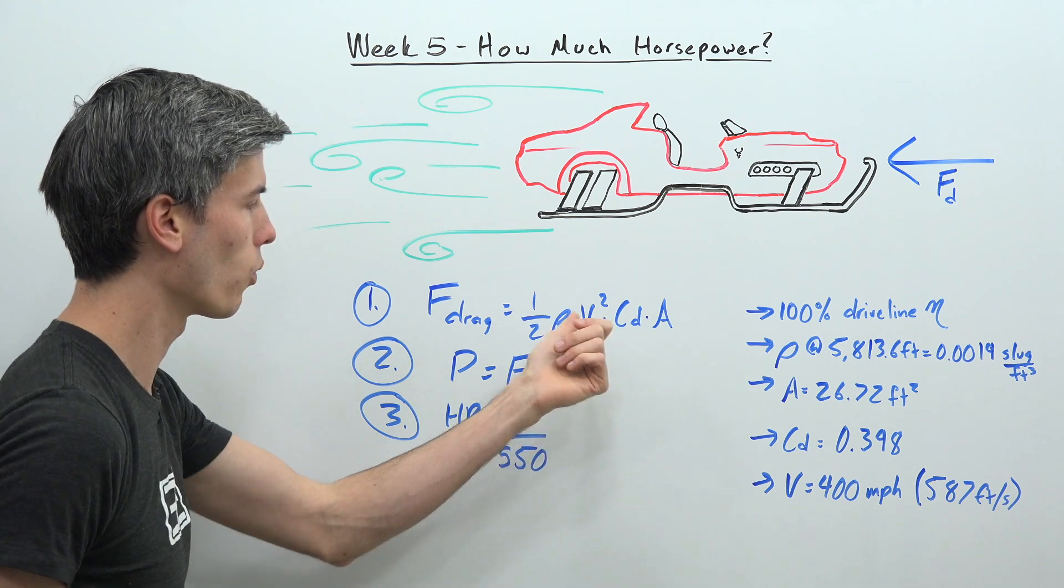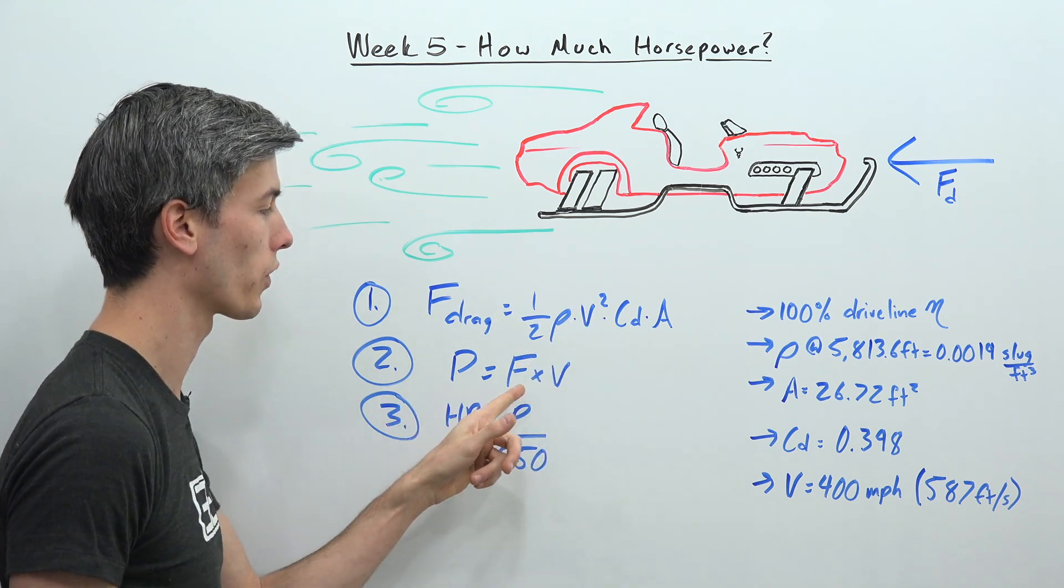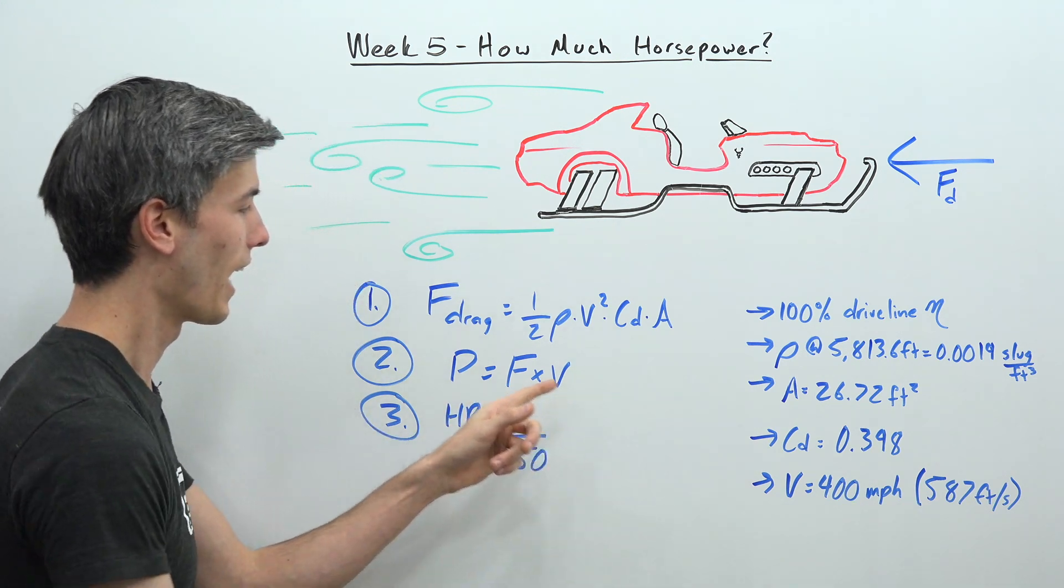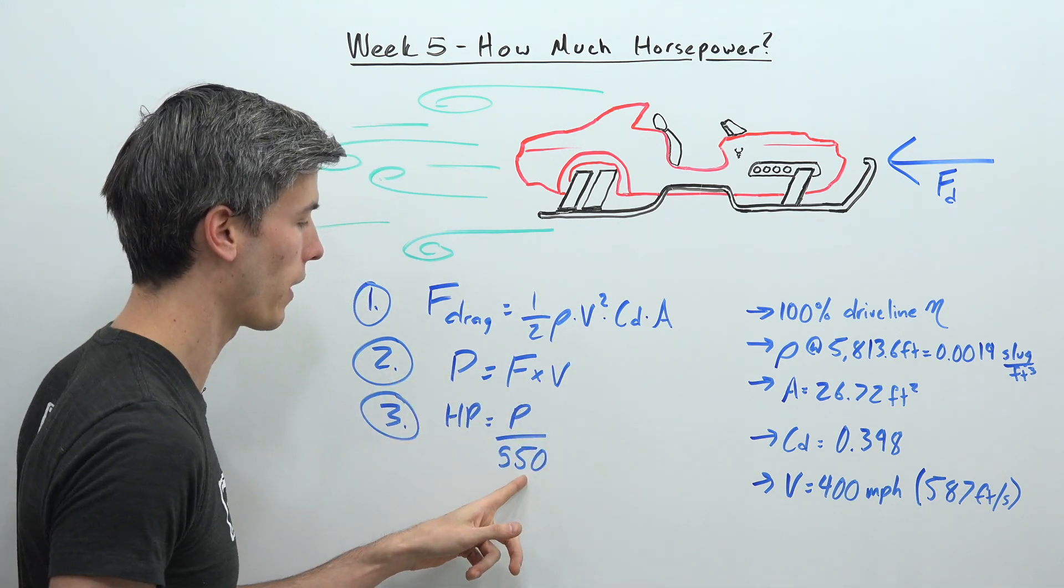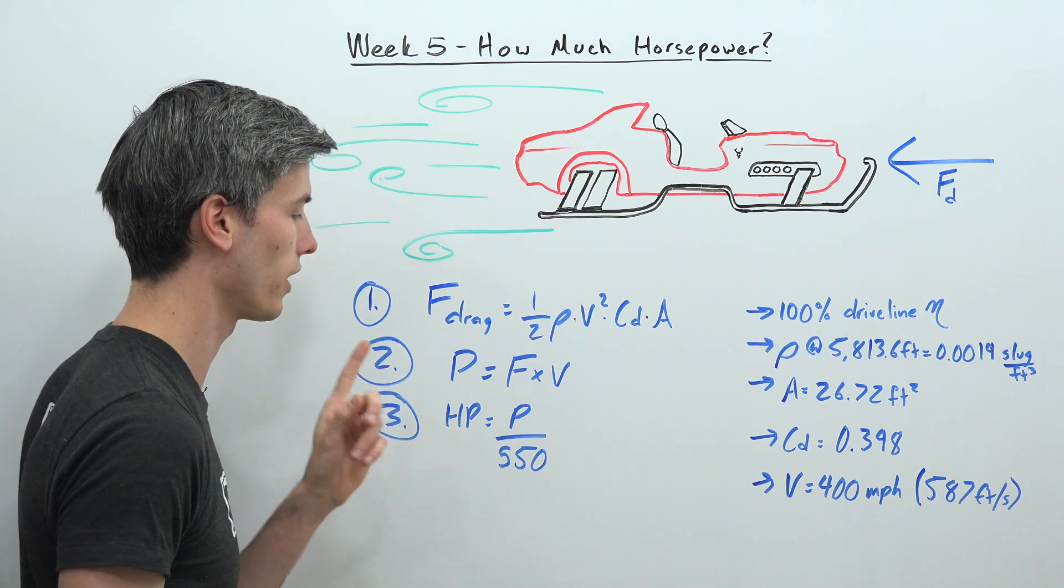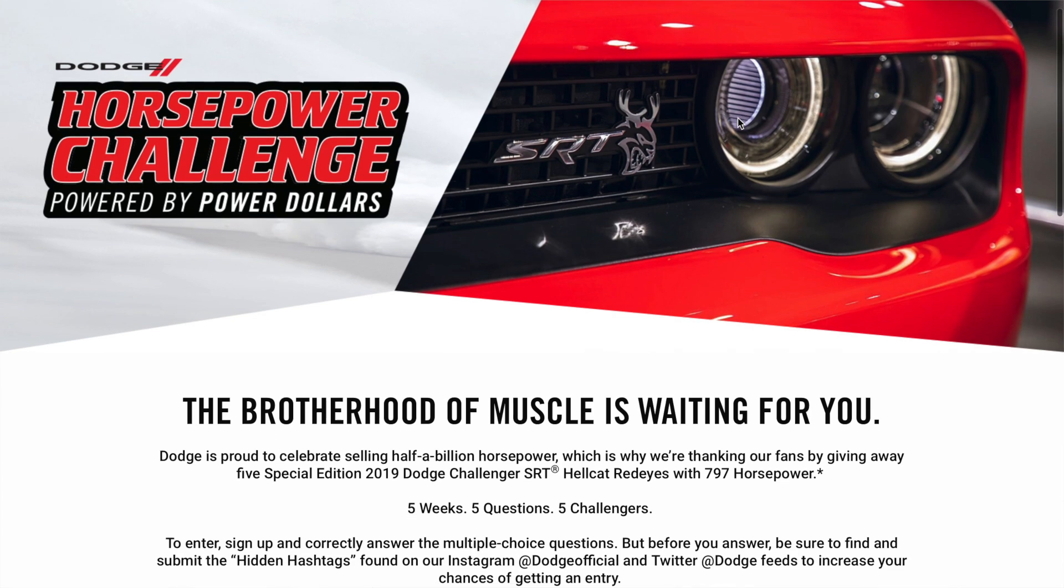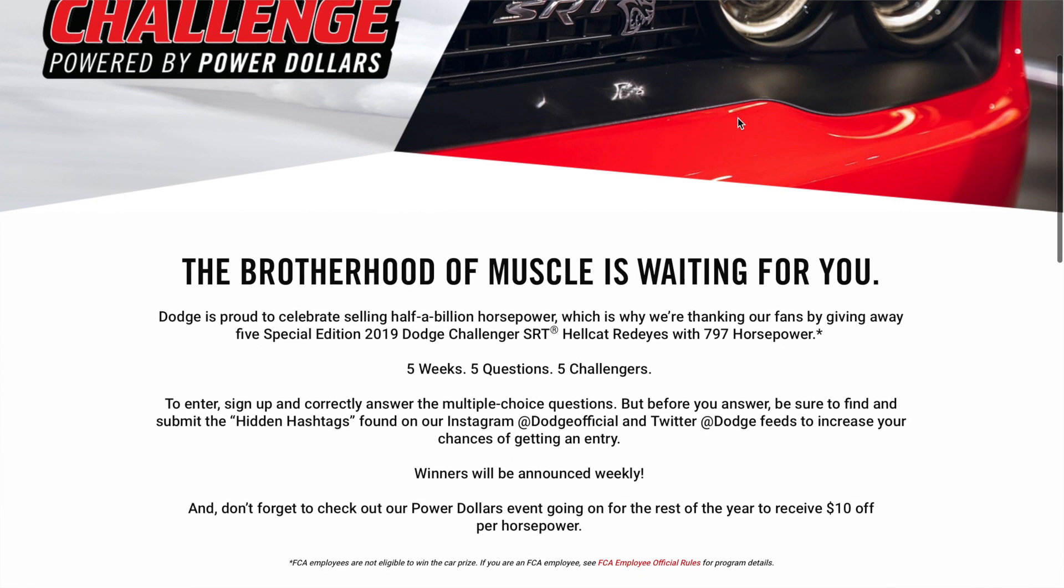So once we have that, power is equal to force multiplied by velocity. We just calculated force. We multiply that by our velocity and then finally we divide all of that by 550 in order to get this in units of horsepower. Then you can submit your answer at DodgeHorsepowerChallenge.com. Good luck to you all.